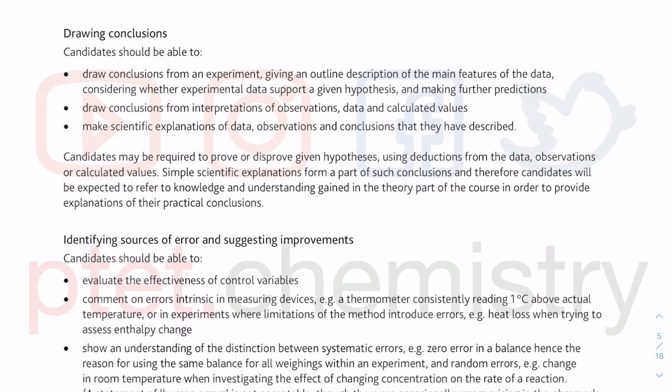Drawing conclusions: make sure when you want to conclude something, you have evidence. This is called working based on evidence — we don't just say a person is guilty. We need to present evidence one, evidence two, evidence three. So if you say something is present, what is your evidence? Do not base it on something you don't see. If you don't see it, try to test for it. That's why you have a table of tests for cations, anions, et cetera, and tests for gases as well.